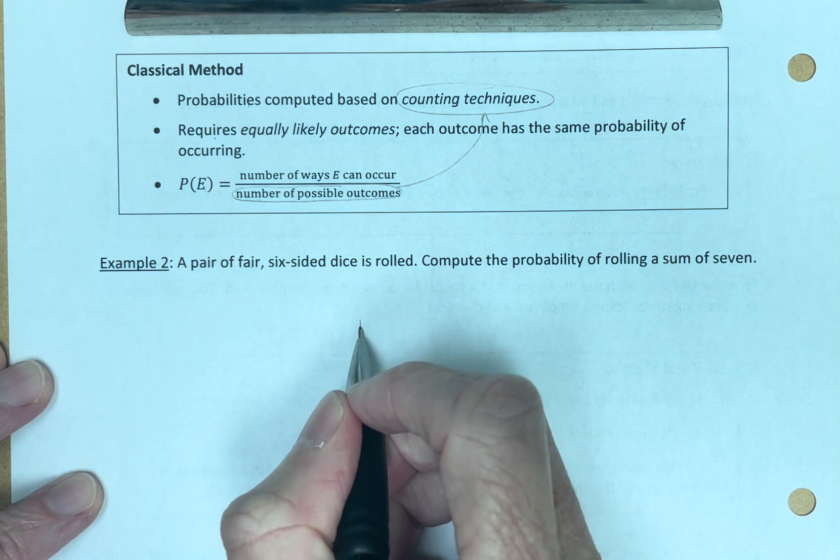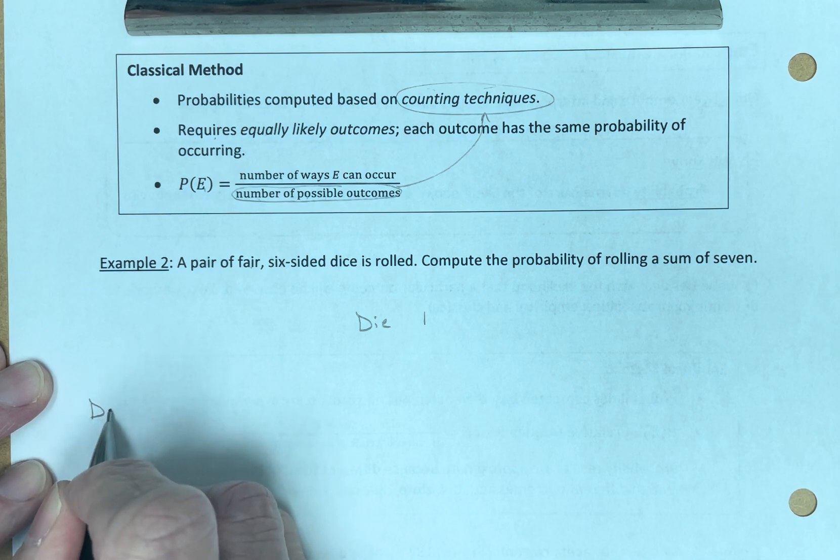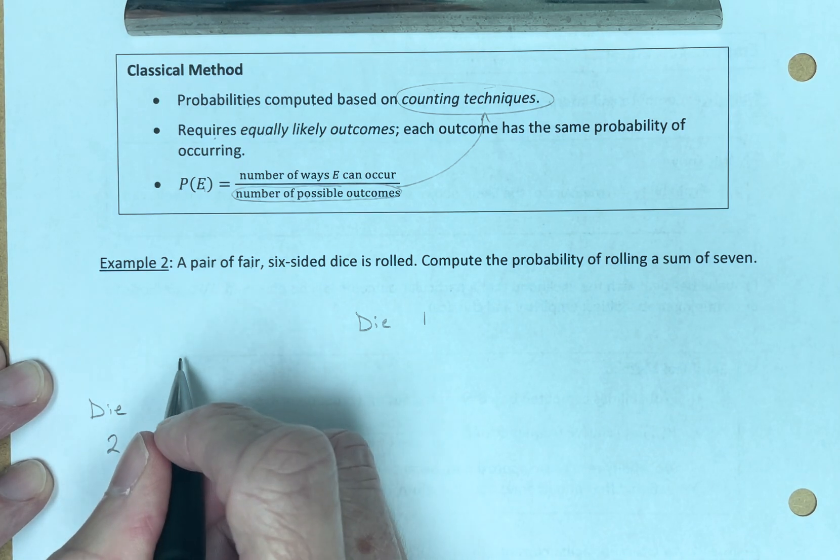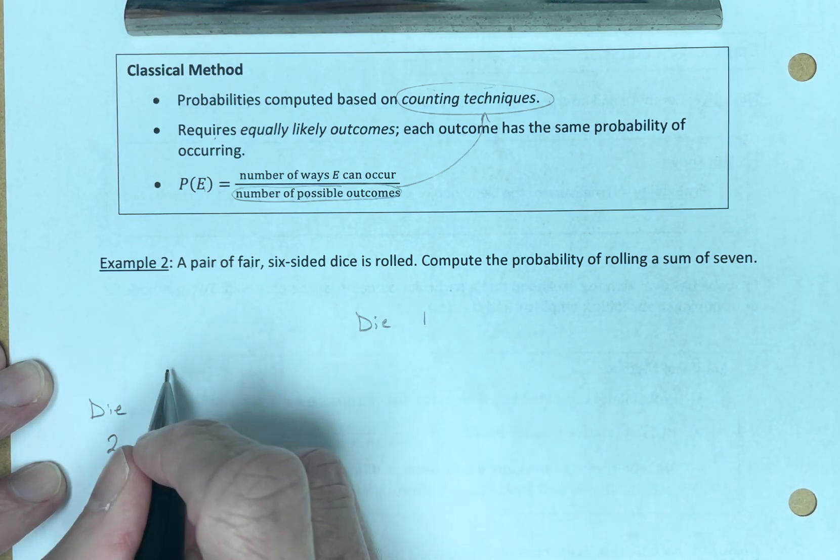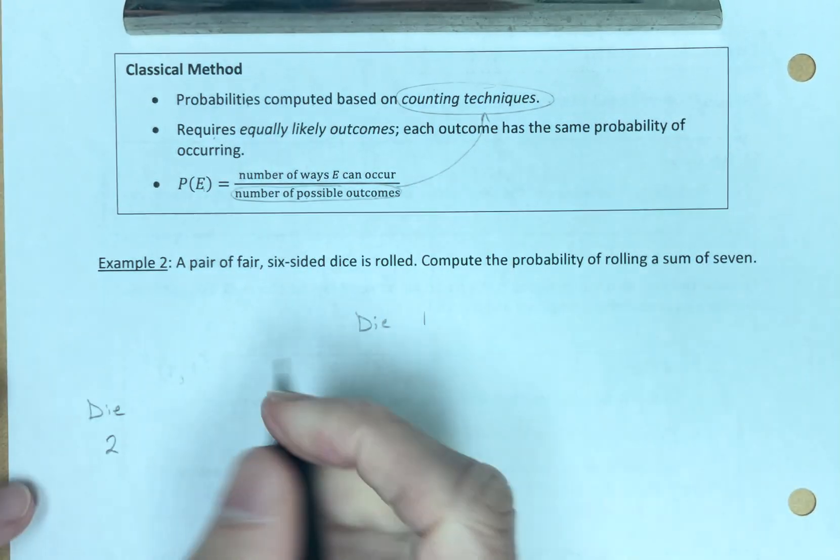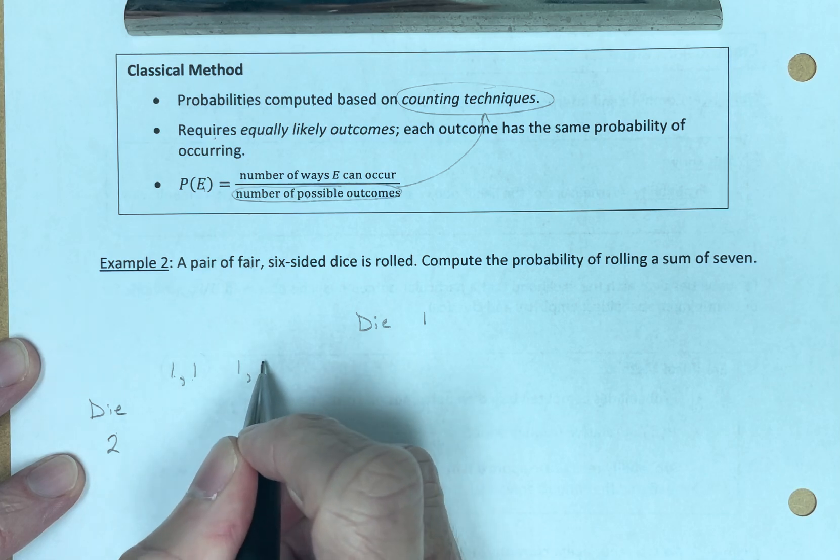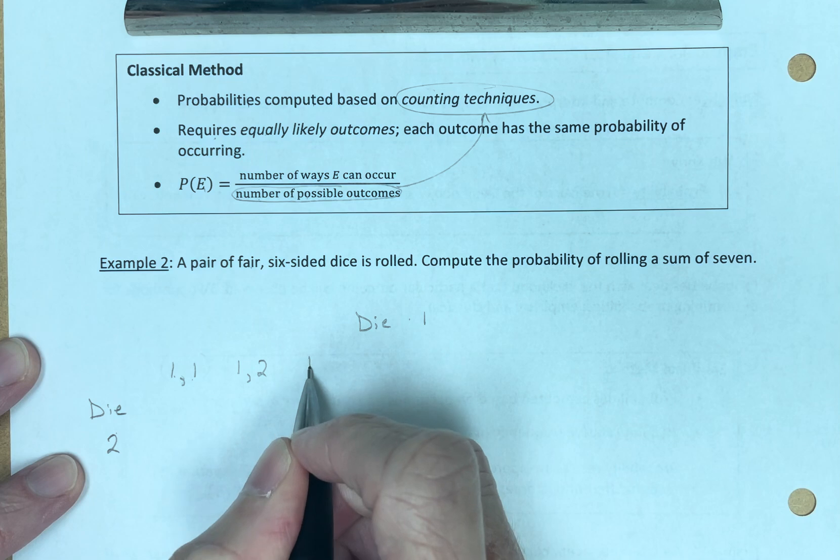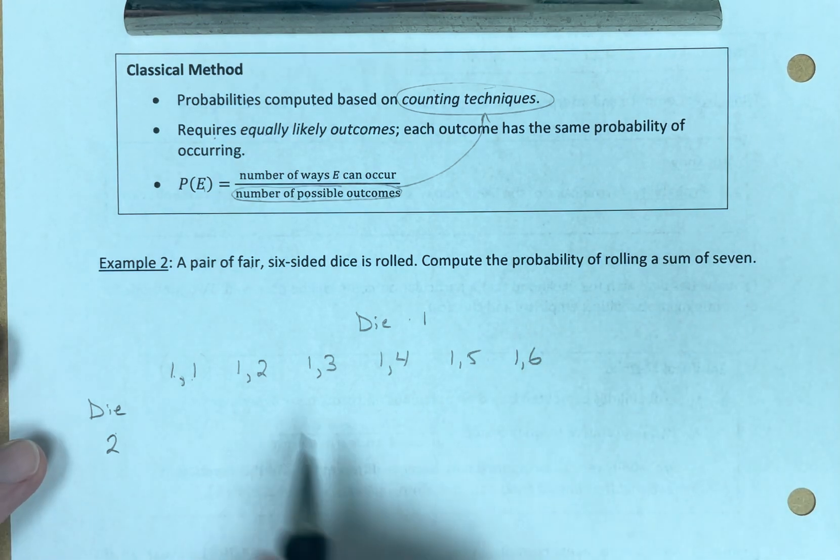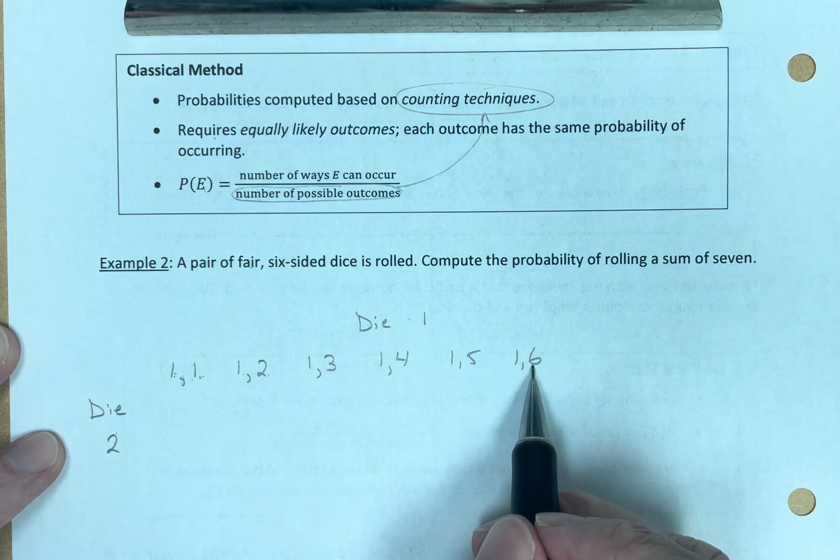Well, let's first list all possibilities. So I'm going to put die number one over here, and I'm going to put die number two over here. And die number one, so we could roll - die number one, we could roll a one, one. I could roll a one, one - die one is a one, die two is a one. I could roll a one, two - die one is a one, die two is a two. And as you might imagine, this could continue like that. My first die could be a one, my second die could be a one through six, one, six.